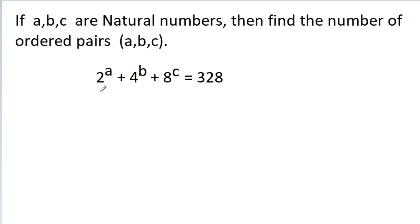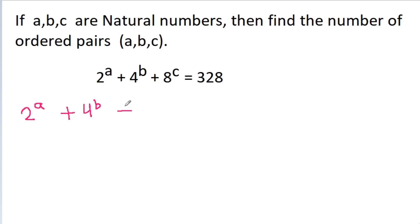In this video, we have been given that 2^a minus 4^b minus 8^c is equal to 328, where a, b, c are natural numbers. We have to find the number of ordered pairs (a, b, c). The given equation is 2^a minus 4^b minus 8^c is equal to 328.